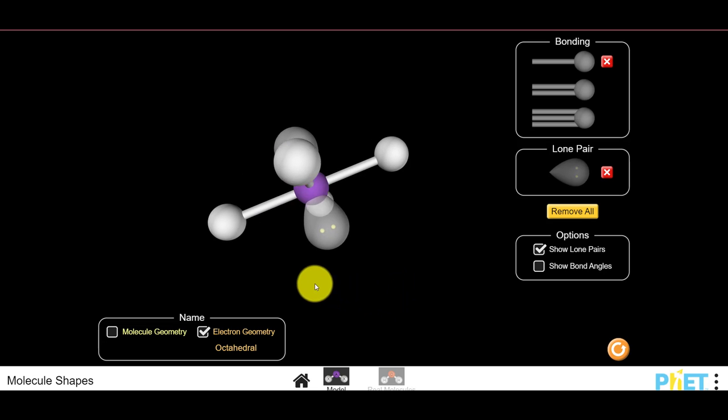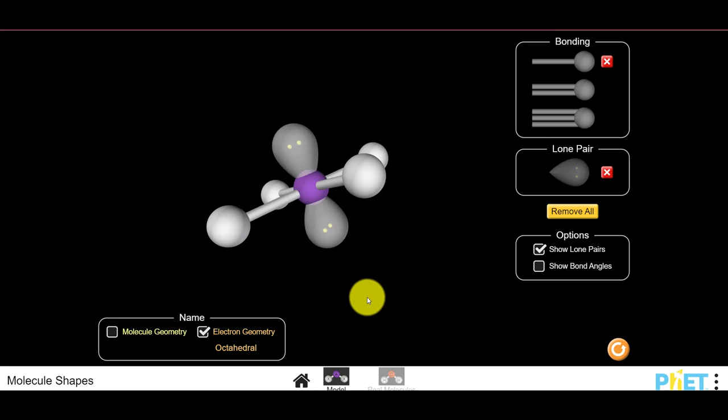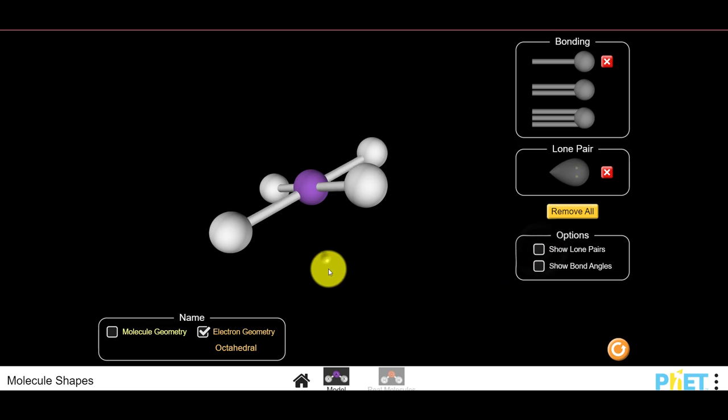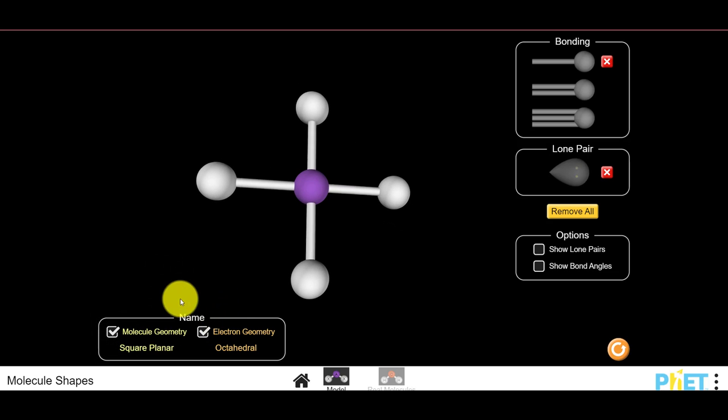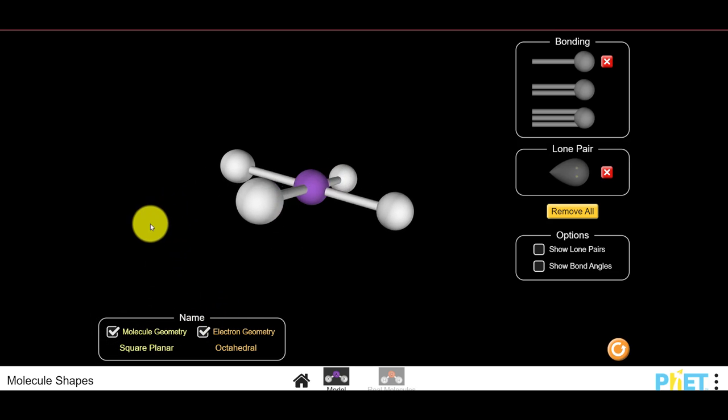Still six sites on the central atom, but now four bonds and two lone pairs. This shape is called a square planar shape. It's a square shape, but it's a flat shape. It's all on a plane.